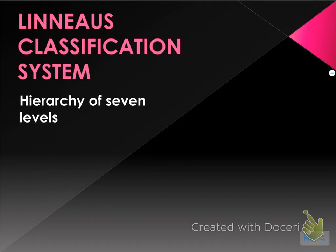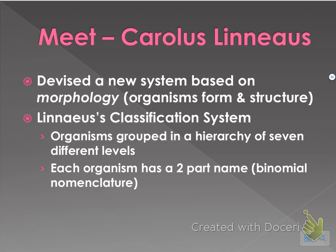These are your lecture notes on the current classification system. Carolus Linnaeus is the person who, after Aristotle, devised a new system based on something called morphology — that's basically just an organism's form and structure. His classification system groups organisms into a hierarchy of seven different levels, and each organism has a two-part name known as binomial nomenclature.